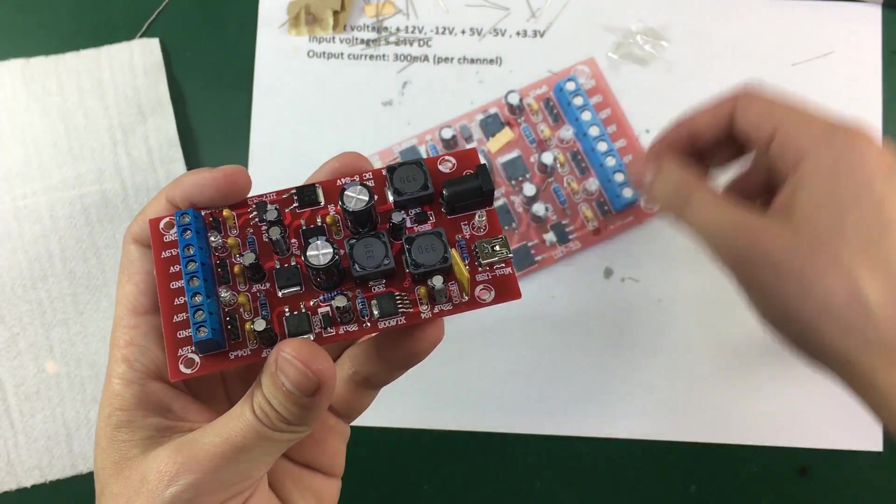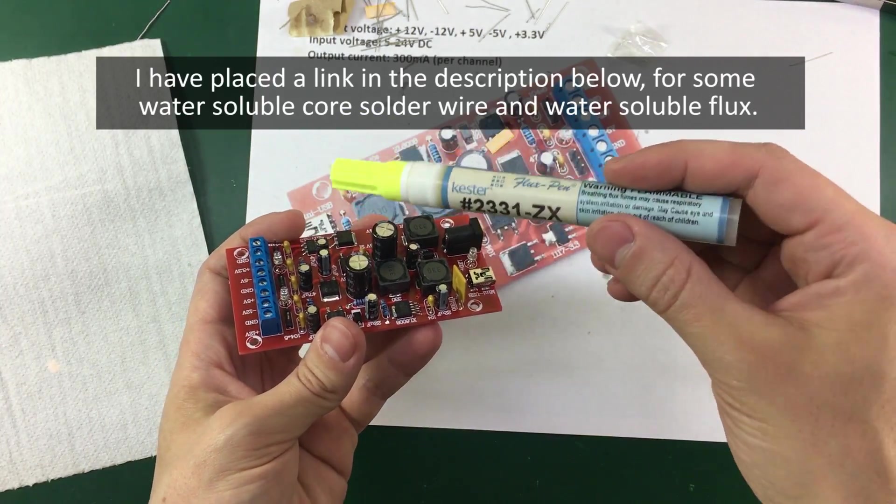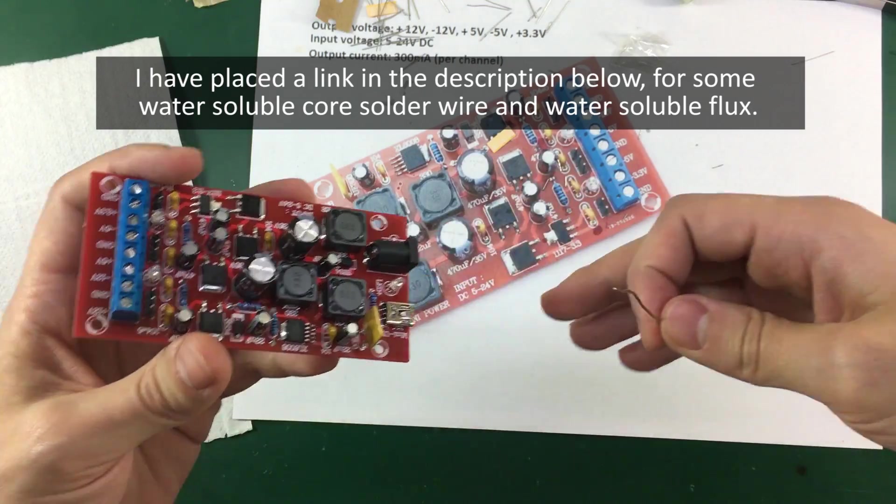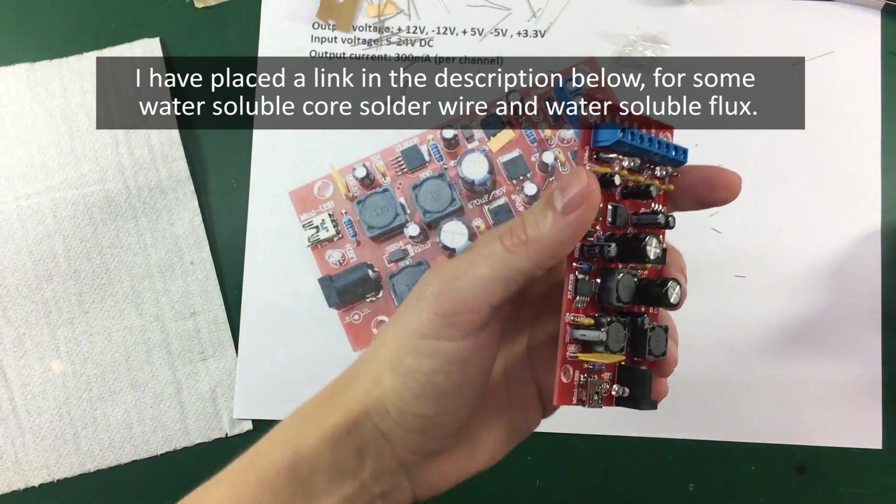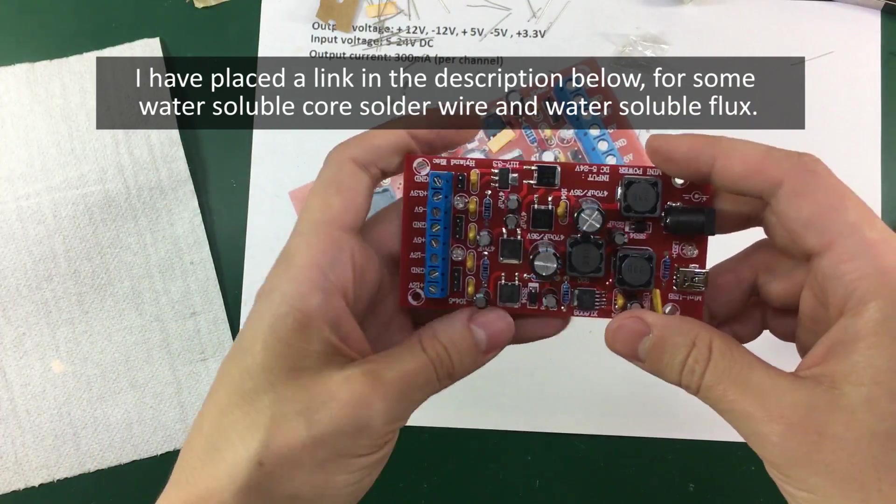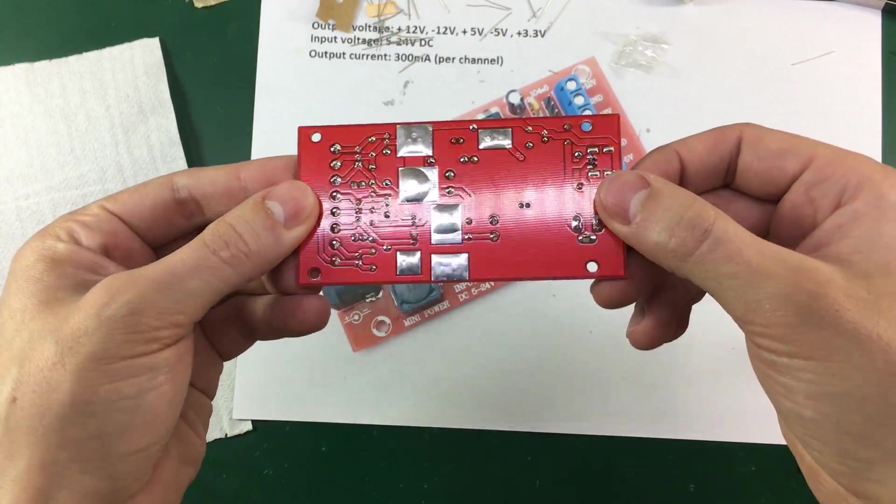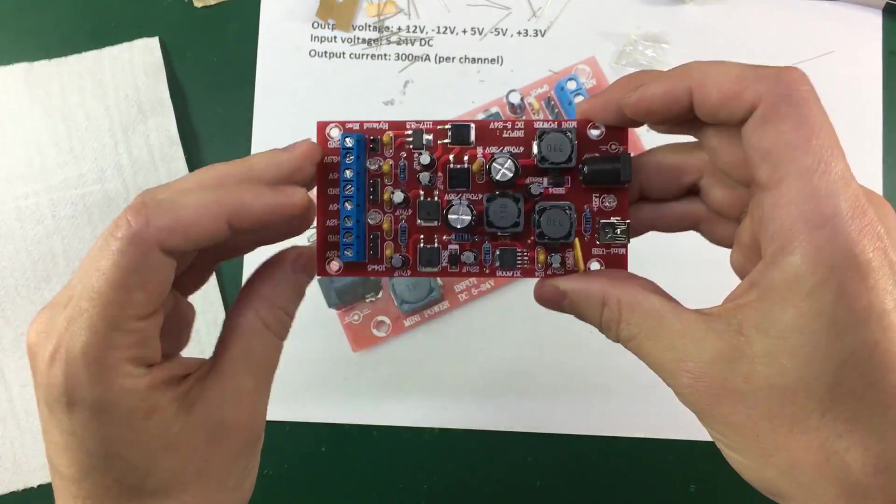So that is the advantage of soldering with water soluble flux and with solder wire that has a core which contains water soluble flux. I have always preferred this solution because I like my boards to be nice and clean when I'm done with them.